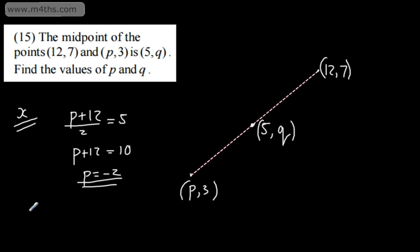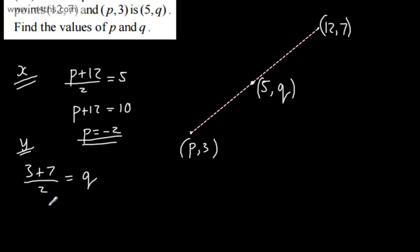With the next one, what we can say is that 3 plus 7, so this is for the y's, 3 plus 7 divided by 2 is going to be equal to Q. And we can see on here that 10 divided by 2, Q is going to be equal to 5.